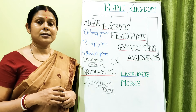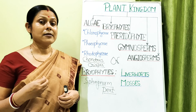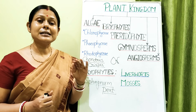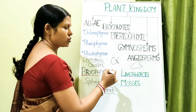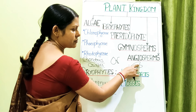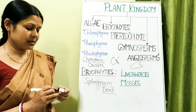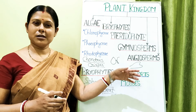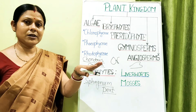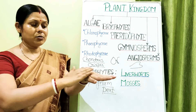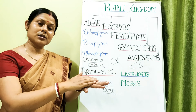In Riccia, the reproductive organs — antheridia (male) and archegonia (female) — are embedded inside the thallus. The thallus shows dichotomous branching, where two heads appear from a point. The plant body is ribbon-shaped with no clear stem, leaf, or root formation, but it is dorsiventrally flat with rhizoids on the ventral surface.